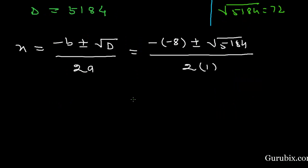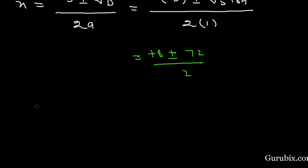This value, so this equals positive 8 plus minus 72 over 2. Therefore, there are 2 values of x. First is 8 plus 72 over 2, or x equals 8 minus 72 over 2.